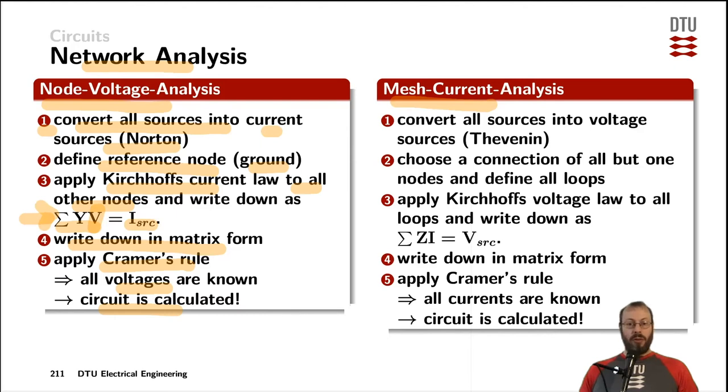So you redraw your circuit so you only have voltage sources left. In case you have any current sources, you find an inner impedance for them and transfer them into a Thevenin voltage.